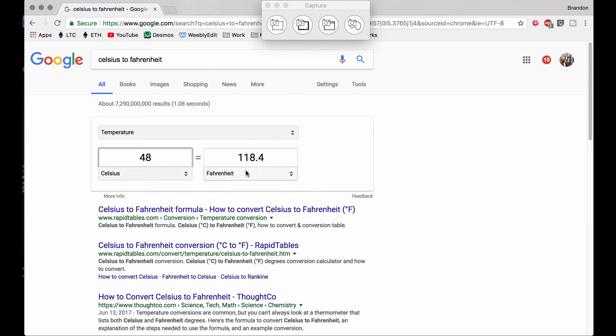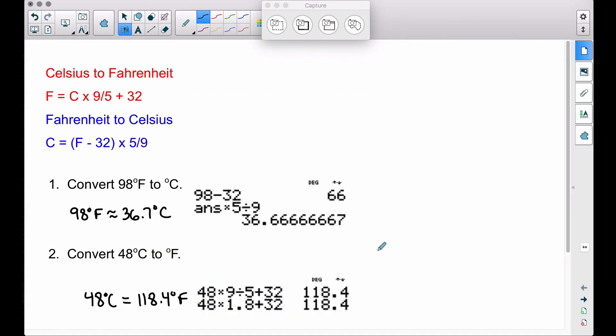And for our other one, I have Celsius on the left and Fahrenheit on the right. 48 degrees Celsius does equal 118.4 degrees Fahrenheit. And there you have it: two quick formulas to convert back and forth between Celsius and Fahrenheit. That's it for this video, I hope it helped.